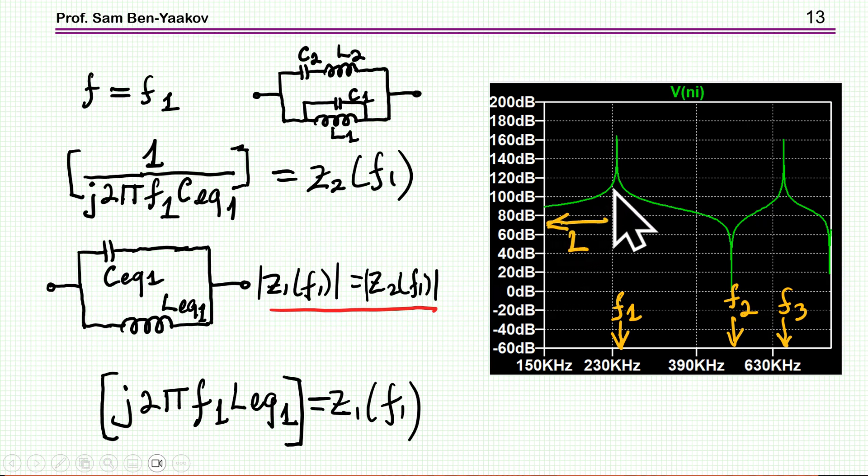Now, we are moving toward the first resonant. Okay? As we move toward the first resonant, then this inductor now is getting the effect of this capacitor in parallel, so it's becoming of a less inductance.